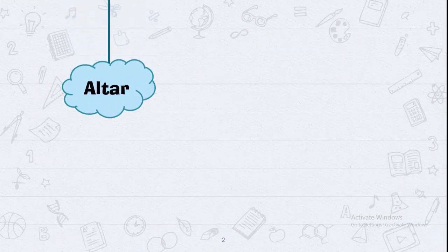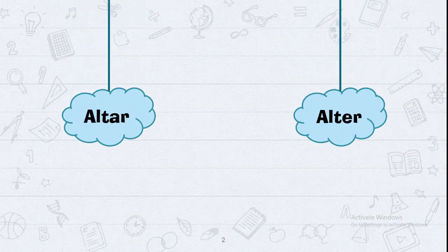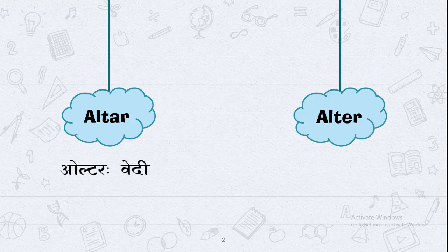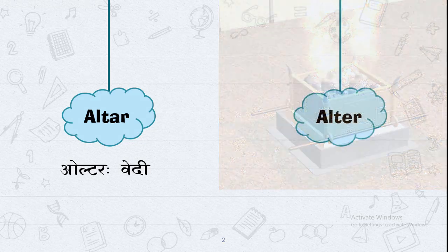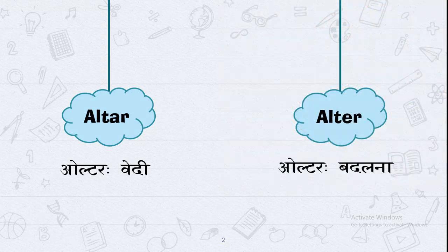The first pair is Altar and Alter. The pronunciation is the same but the spelling has a slight difference. The first is A-L-T-A-R while the second is A-L-T-E-R. The first, Altar, means Vedi — the sacred platform used when we do Havan. That is called Altar in English. And the second, Alter, means Badalna — to change.